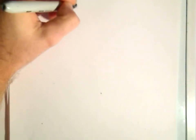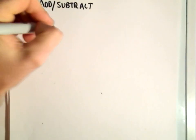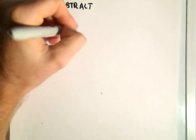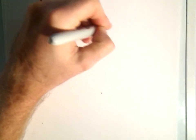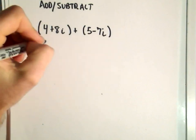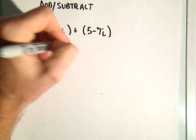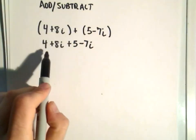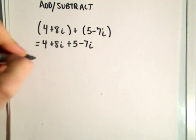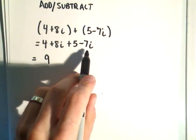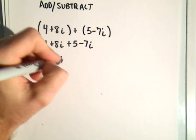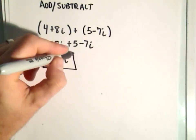Adding and subtracting complex numbers is pretty straightforward — you basically just do it almost like they're variables. So suppose it was (4 plus 8i) plus (5 minus 7i). You can just get rid of the parentheses: 4 plus 8i plus 5 minus 7i. We add the real parts — 4 plus 5 gives us 9 — and then 8i minus 7i, which is 1i. And we have now added those together.